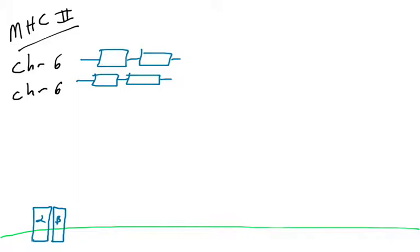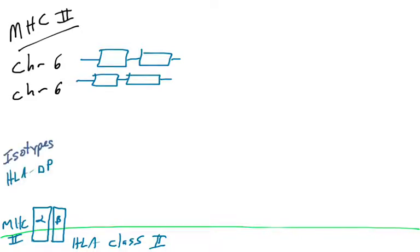MHC class 2 molecules — which we'll also call HLA class 2 molecules — are sometimes used interchangeably when talking about this molecule that presents peptides to CD4-positive T cells. It's made of two protein chains: the alpha and the beta. These proteins come from genes that code for them, and it turns out there are many different genes that code for these proteins.